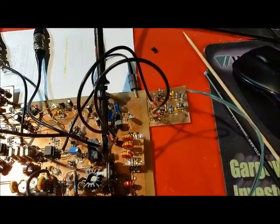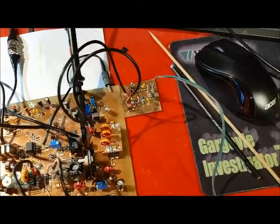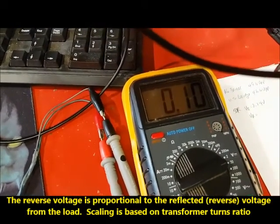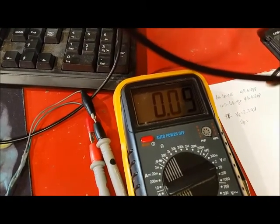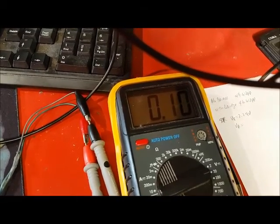My voltmeter is now connected to the reverse port. So let's take a look at what the reverse voltage is. And the reverse voltage is 0.10 volts, and that's for a 50 ohm load.